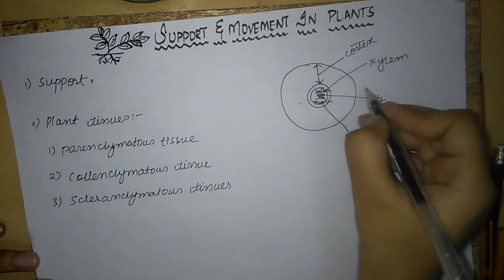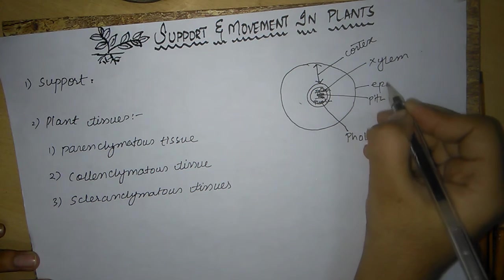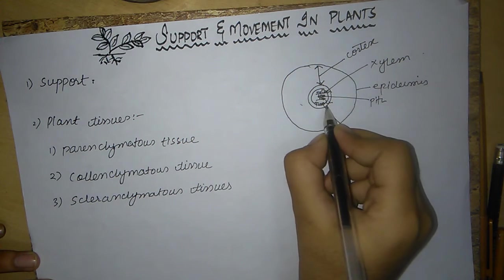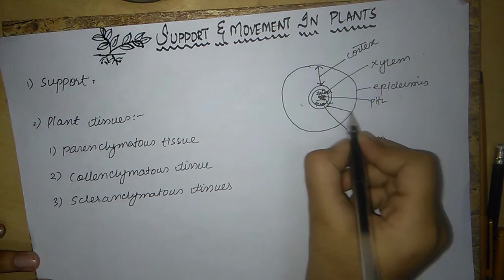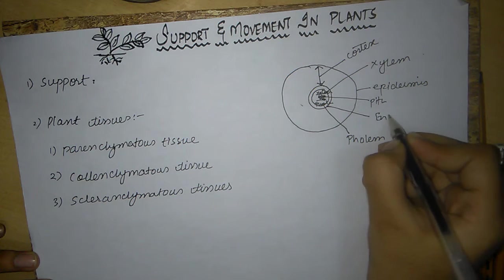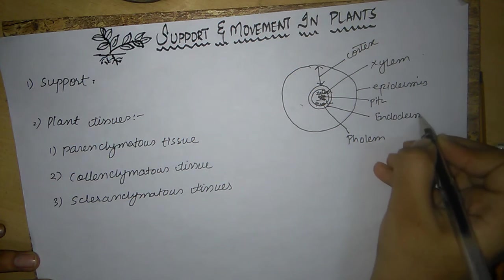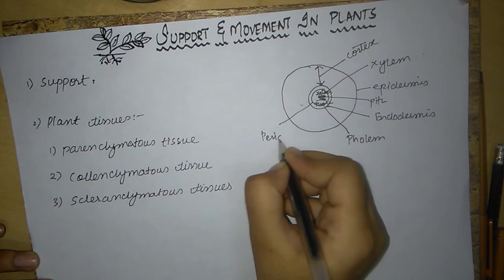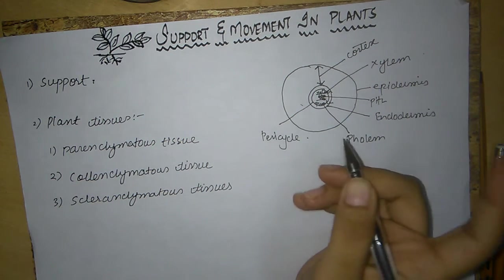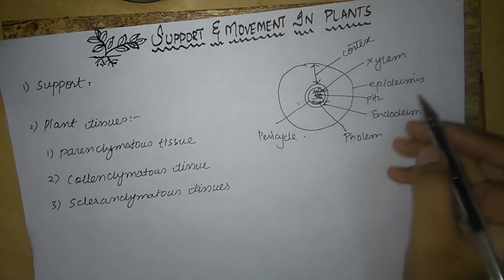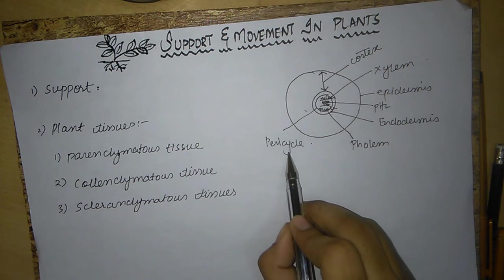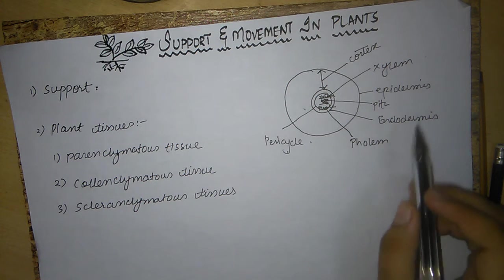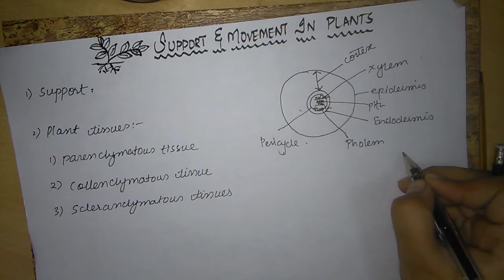This is called epidermis. This is called endodermis. And this is pericycle. Pericycle, endodermis, and pith are collectively called the stele.